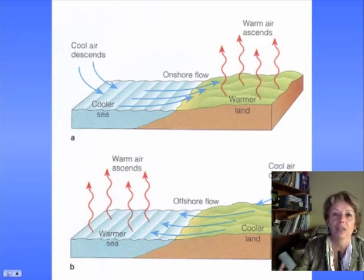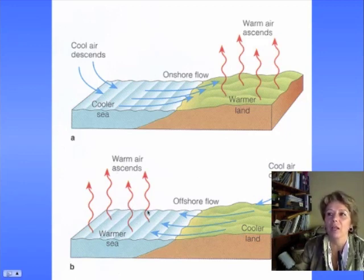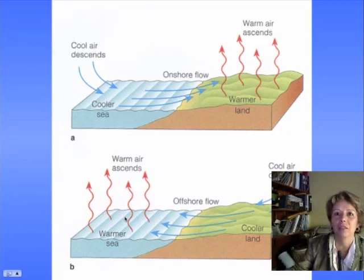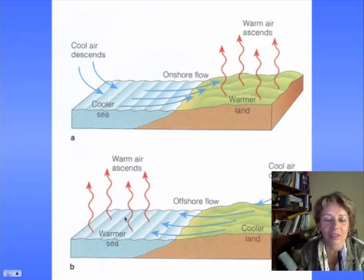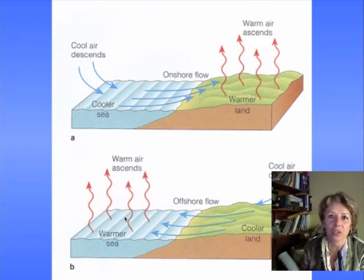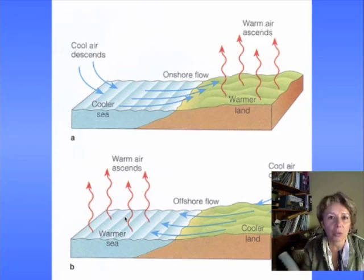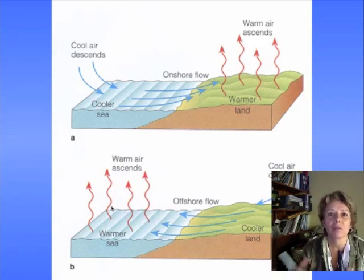At night, water has high heat capacity and land has low heat capacity, so the water stays the same temperature but the land gets really cold. The air over the water is warmer than the air over the land, so the warm air rises and the cool air comes in to take its place — that's why at night the breeze blows from the land to the sea. In summary: in the daytime, hot air rises over the land; at night, hot air rises over the ocean. Either way, the cool air comes in to take its place.